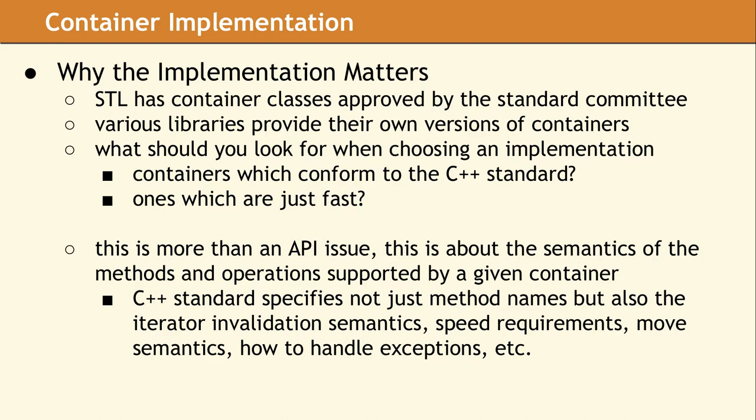Now that we have talked about what a container is, we want to look at how the implementation affects the behavior. This is not just theoretical. If you have a given container and then change to use a different implementation, you may also need to change the code which uses the container, meaning your code may not be portable if you are using a non-standard container implementation. One of the major advantages of the C++ standard container classes is the level of detail with which the standard specifies the containers — not only method names and what they do, but also when iterators are invalidated, how fast each method is, whether it moves or copies the data, what happens if an exception is thrown, and many other factors that matter a great deal.